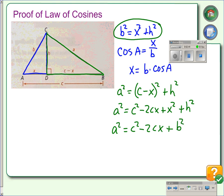And then we're going to substitute for x. We know that x equals b times the cosine of A. So in the place where x was, we're going to put b times the cosine of A.